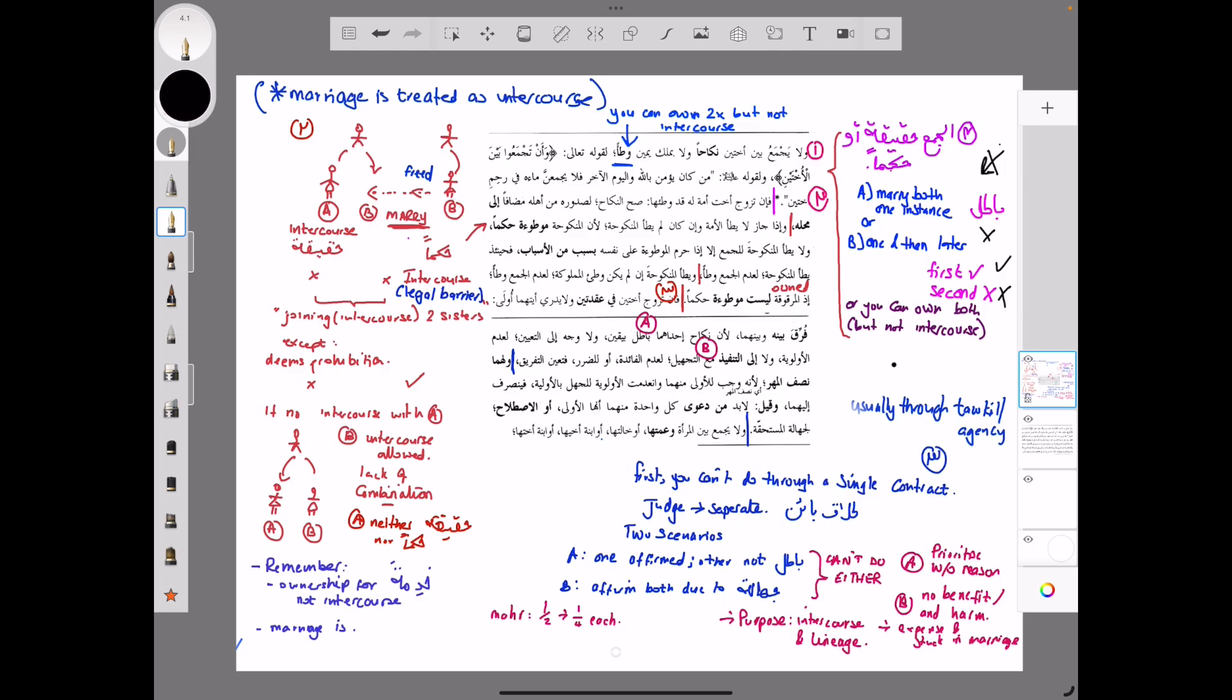What might happen is that you might marry one sister, which is perfectly valid. And then because marriage is understood as intercourse here, you try to marry the second one. The first one will stand, the second one is invalid. Okay. Now when it comes to owning two sisters, you might find yourself in a scenario, somebody might find themselves in a scenario where they own two sisters. Because in ownership, the ownership is not understood as for intercourse. You can own two, but as long as intercourse does not take place with both of them, only one of them.